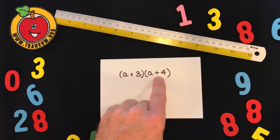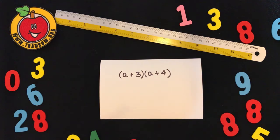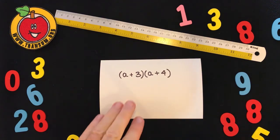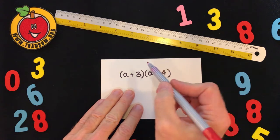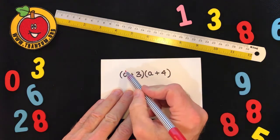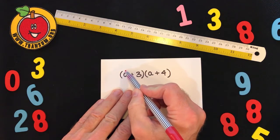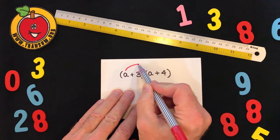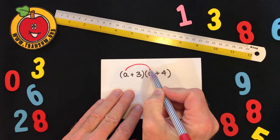Everything in the first bracket has to multiply everything in the second bracket. I'm going to draw red lines to show which terms — which pairs of terms — are multiplied together.